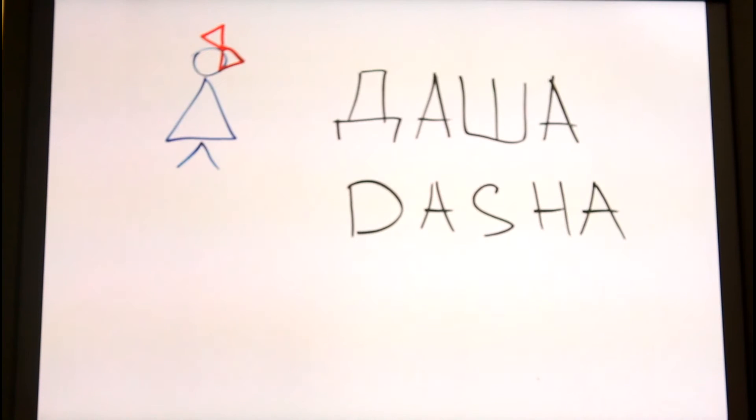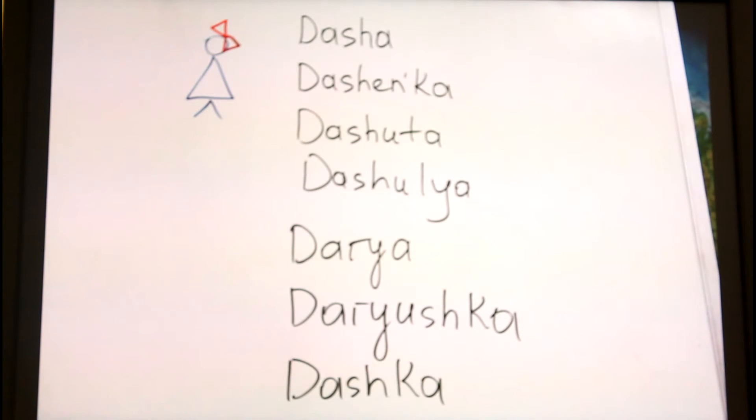Another example, a Russian female name DASHA. Here you have even more variants: DASHA, DASHEN'KA, DASHUTA, DASHULYA, DARIYA, DARIYUSHKA, DASHKA. And those are all referring to the same person.